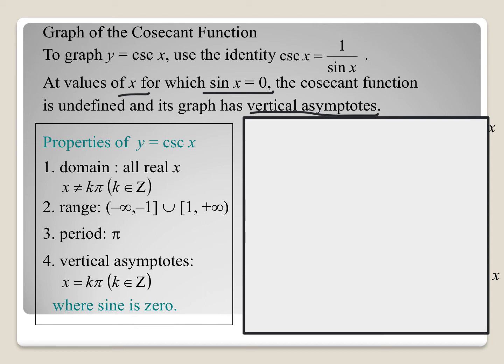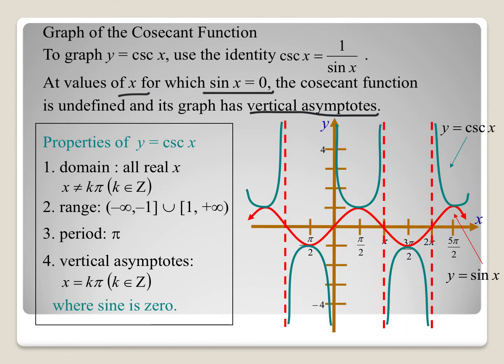When we piece this all together for our graph of the cosecant function, the red portion represents the sine function, and we're going to use that to help create our cosecant function, which is the green function. We can see our properties in play: at pi, we have a vertical asymptote, and at 2 pi, again, we have a vertical asymptote. That supports properties 1 and 4, where those values are not part of our domain.